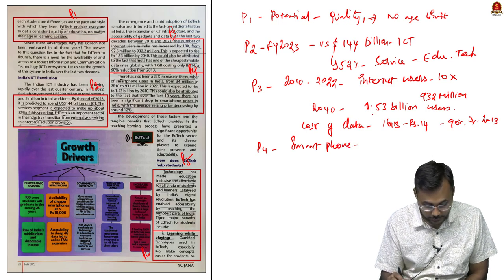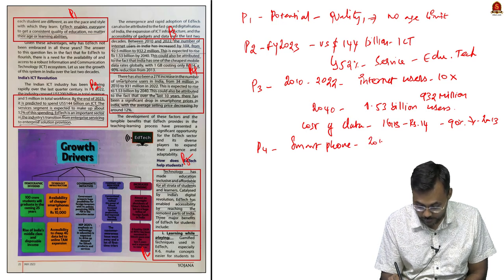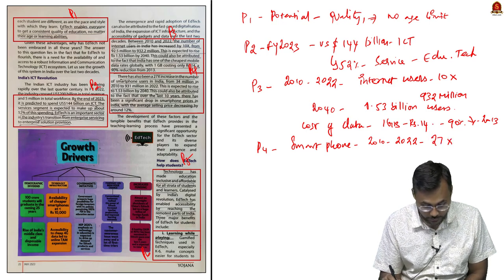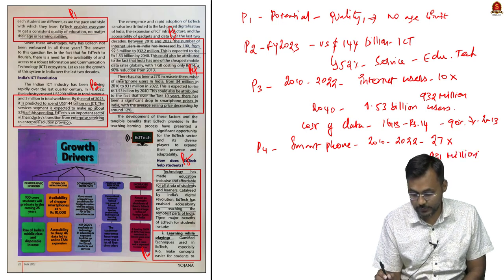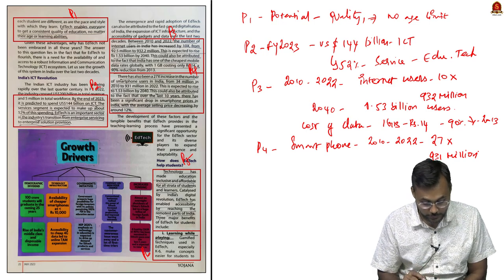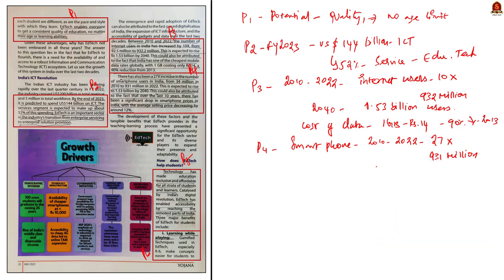Paragraph 4 speaks about smartphones as another important criteria. For the same period 2010 to 2022, smartphones increased 27 times — from 34 million to 931 million. By 2040, 1.53 billion smartphones are expected, and the primary reason is the average selling price has decreased by 12 percentage.